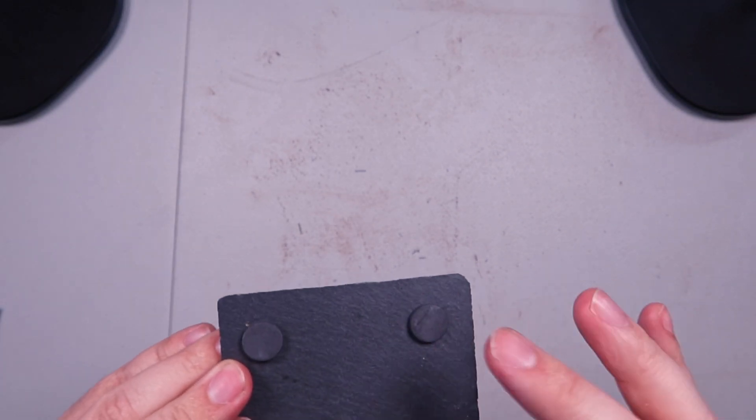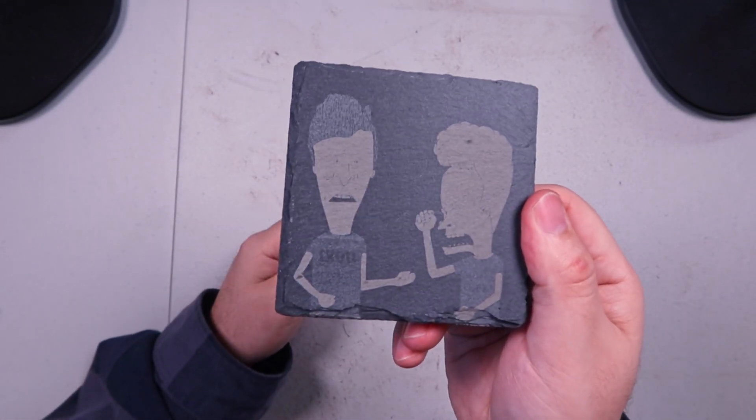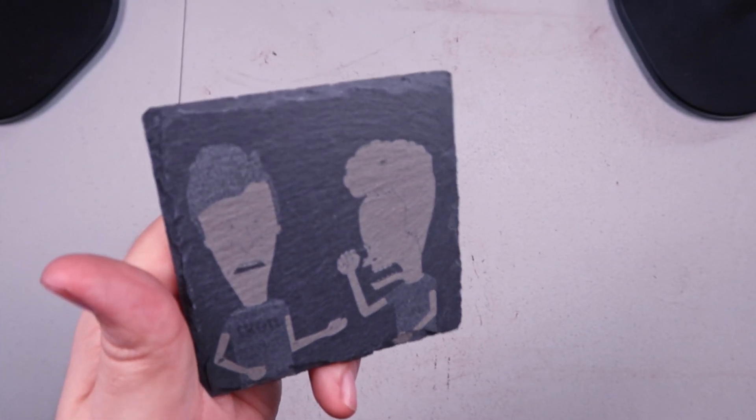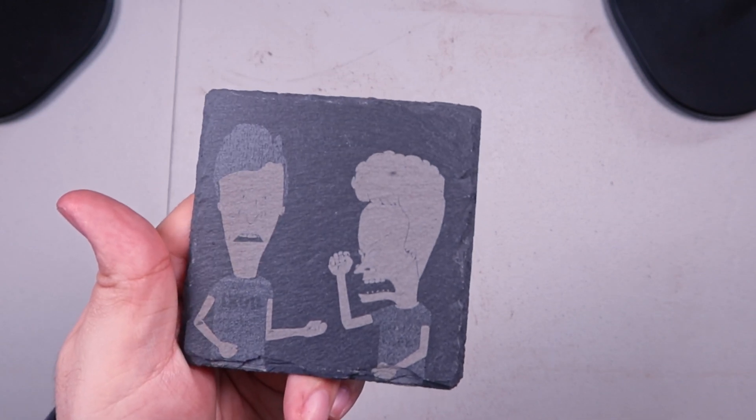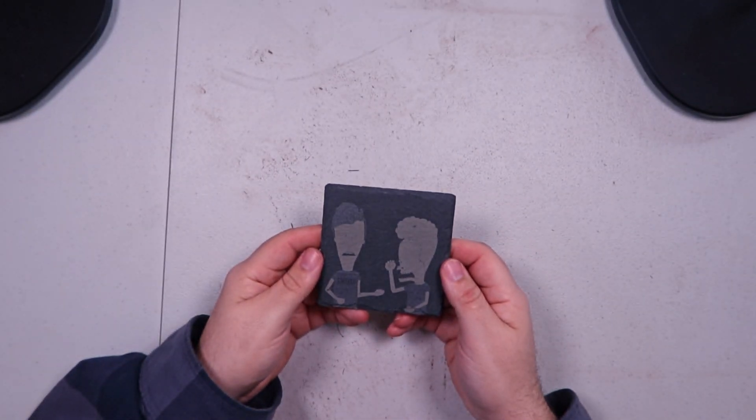I would just do like a test pattern or something, maybe on the back, and try to figure out what speed and powers I want. But it turned out really good. I don't know how well you can see Beavis and Butt-head there, but I mean they came out pretty good. This took like 10 minutes or something and it's great.